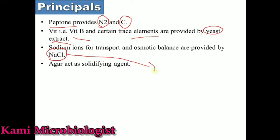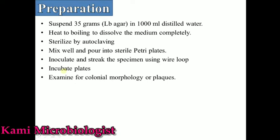This media also contains NaCl, which maintains the osmotic balance inside the cell. In this case, NaCl is specially used to make the bacterial cells and bacteriophages become charged, so that opposite charges occur between them, allowing bacteria and bacteriophages to connect with each other easily. We can also add magnesium chloride, which similarly provides a charge on bacteria as well as on bacteriophages. Agar acts as a solidifying agent; if making broth, agar is not needed.